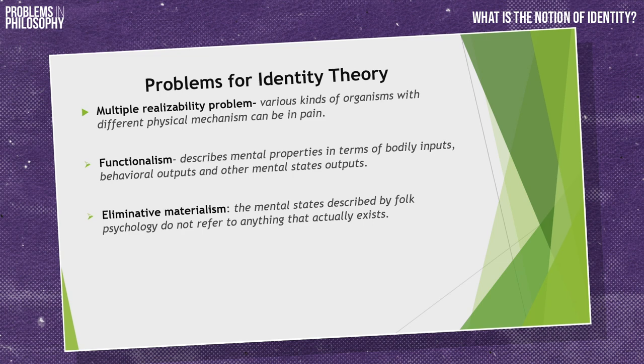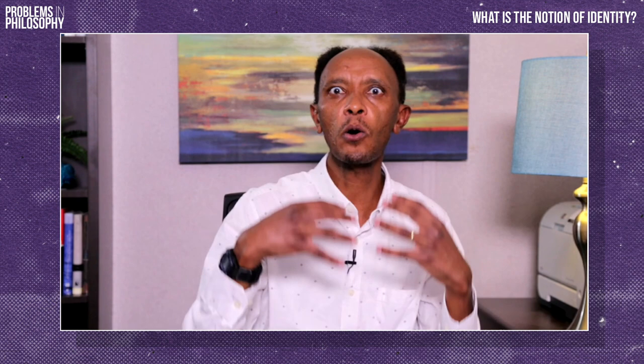The multiple realizability problem holds that various kinds of organisms with different physical mechanisms can be in pain. If the way our brain is organized facilitates our ability to feel pain, then other organisms, unlike us, can also have similar experiences with a completely different configuration and arrangement of the nervous system. In that case, identity theory's claim that pain is identical to C-fiber firing in our brain is going to be in trouble. Because of this problem, people have proposed that functionalism is the way to go.